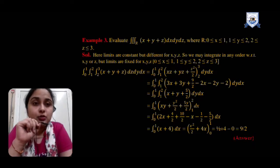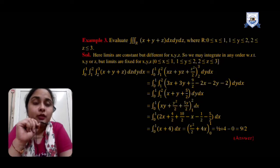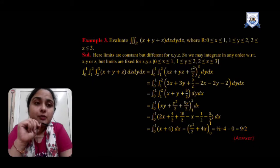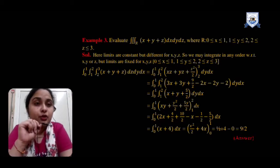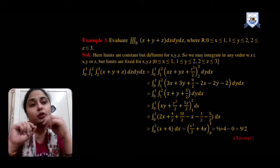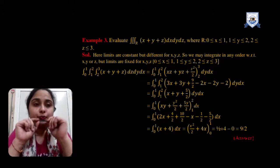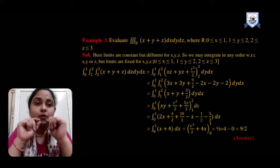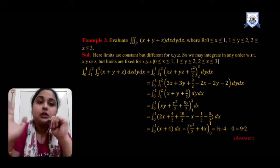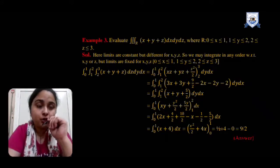Integrating with respect to z first, treating x and y as constants, we get xz + yz + z²/2 evaluated over the limit 2 to 3. Substituting z only — x and y remain as constants. Putting the upper and lower limits gives an algebraic expression which simplifies to x + y + 5/2. Integrating with respect to y next, we get xy + y²/2 + 5y/2 over the limit 1 to 2. Putting those limits and simplifying gives x + 4.